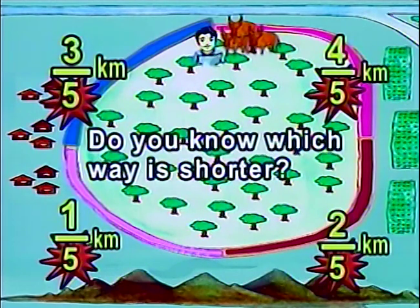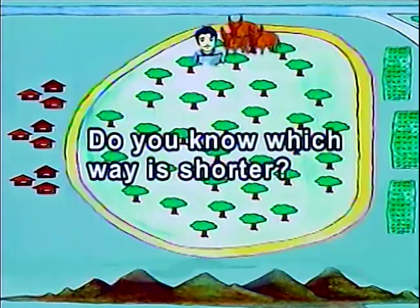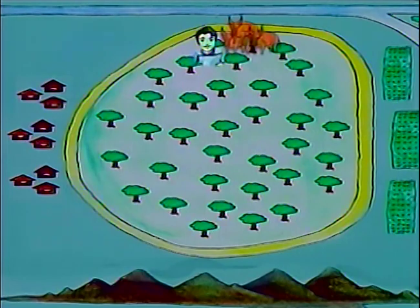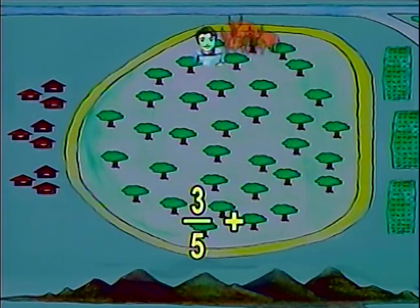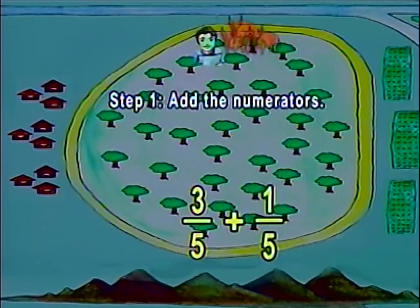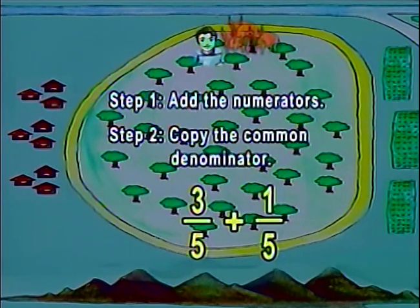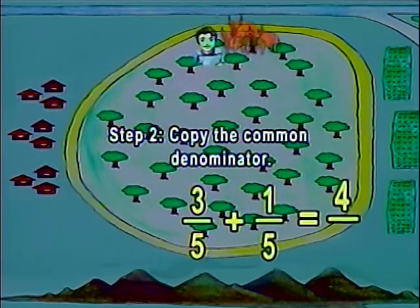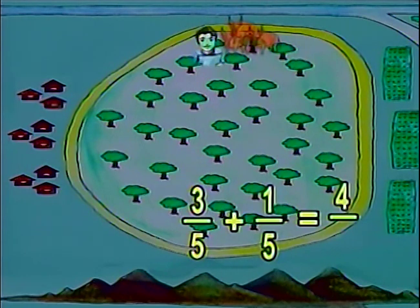To find out, we simply add the fractions. For the first route, the given fractions are 3 fifths plus 1 fifths. First, add the numerators, and then copy the common denominator. So, 3 plus 1 equals 4, over the common denominator 5. The first route is 4 fifths kilometer.